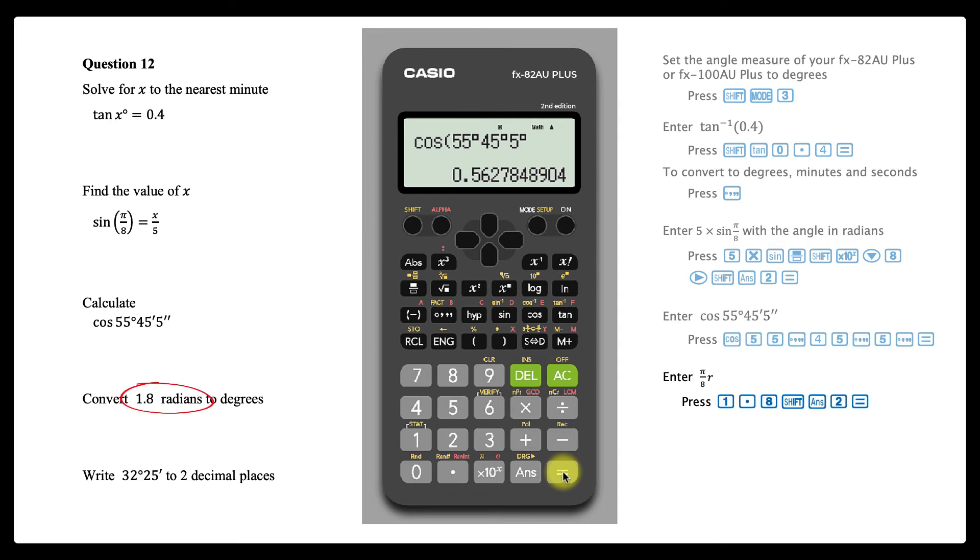To convert an angle like 1.8 radians into the calculator's global angle measure, which is degrees in my case, enter the angle, pressing shift and the answer key to access the radian local angle measure by pressing 2.